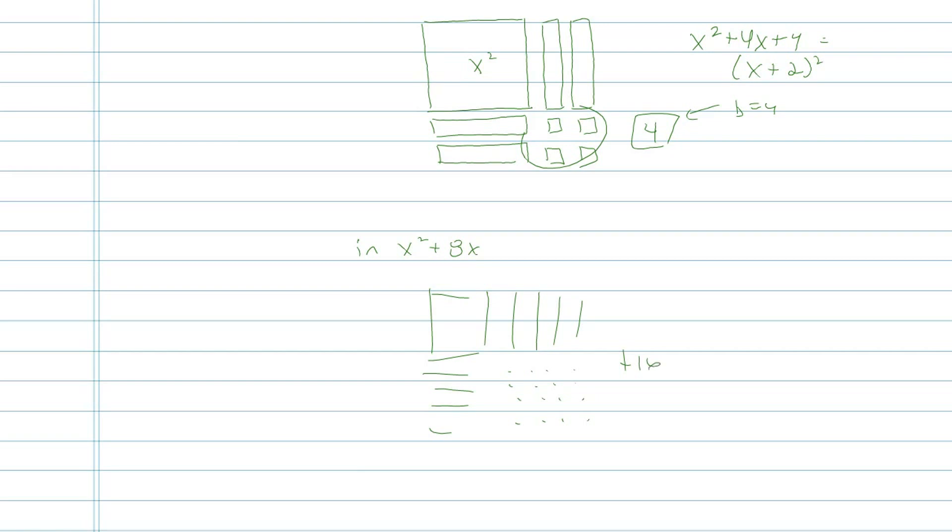I need 16 right here. So if I have in this problem x squared plus 8x plus 16 it's going to become x plus 4 quantity squared. Okay, and the amount I'm adding is 16. So again, thinking about how did I get from this b number to get to the number of units that I added.